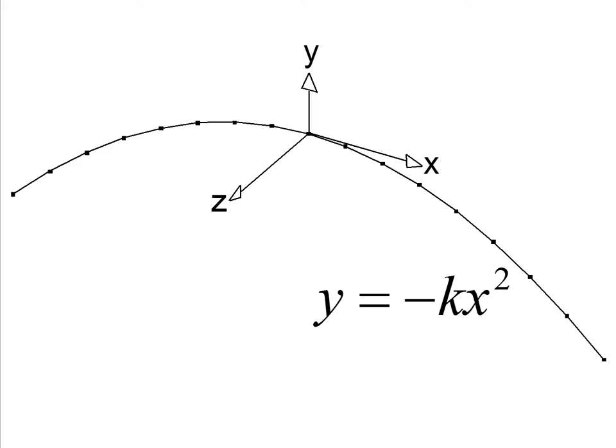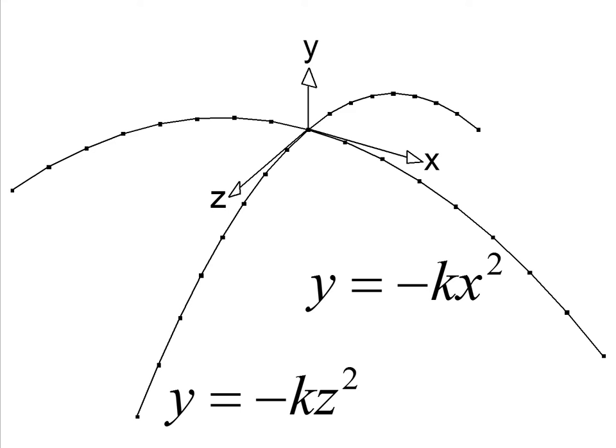This is what this parabola looks like in a three-dimensional view. x and y define the plane in which the parabola exists, and the parabola is y equals minus kx squared, and then the dimension perpendicular to that plane is labeled z. This initial parabola can be duplicated through a 90-degree angle to produce a second parabola with the equation y equals minus kz squared.